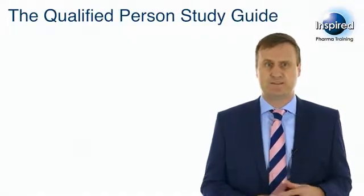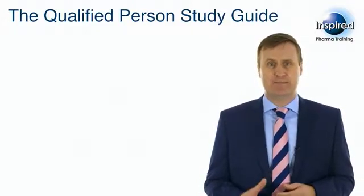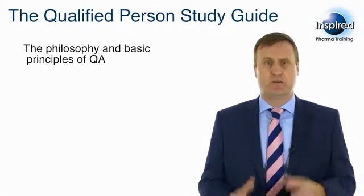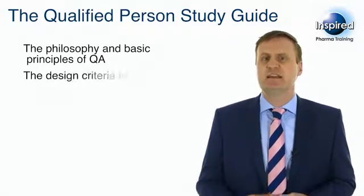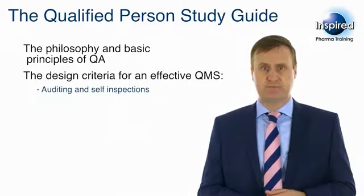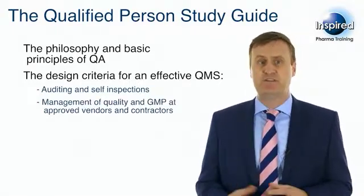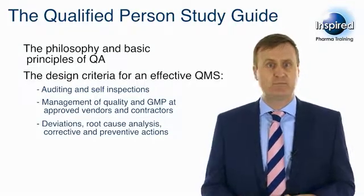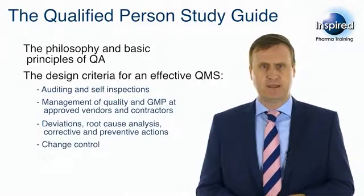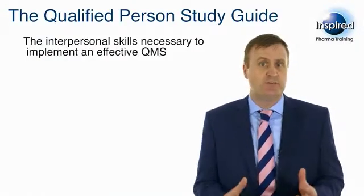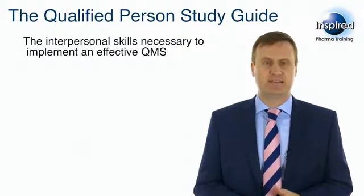The QP study guide has the following requirements for this module, where applicants will be expected to demonstrate a thorough understanding of the following: the philosophy and basic principles of quality assurance; the design criteria for an effective QMS, including auditing and self-inspections; management of quality and GMP at approved vendors and contractors; deviations, root cause analysis, corrective and preventive actions; change control, documentation and record keeping, quality risk management, complaints and recalls; the interpersonal skills, leadership, delegation and communication necessary to implement an effective QMS.